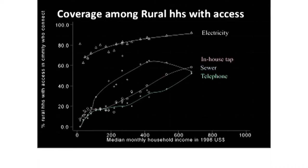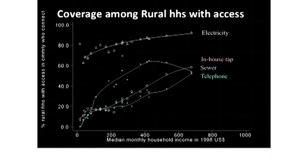This next slide shows rural coverage among households that have access — meaning they could connect if they wanted to. If a household has access to electricity in rural areas and is very poor, it's highly likely they're going to connect to electricity. But that's not true for the other infrastructure services.